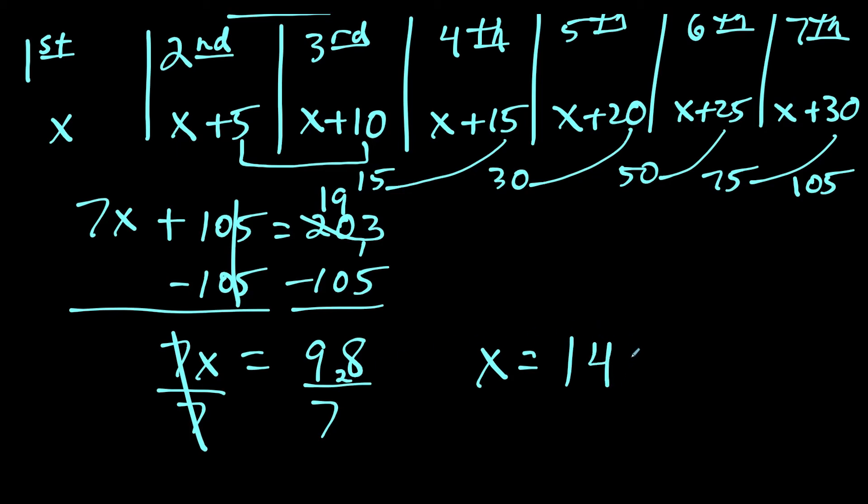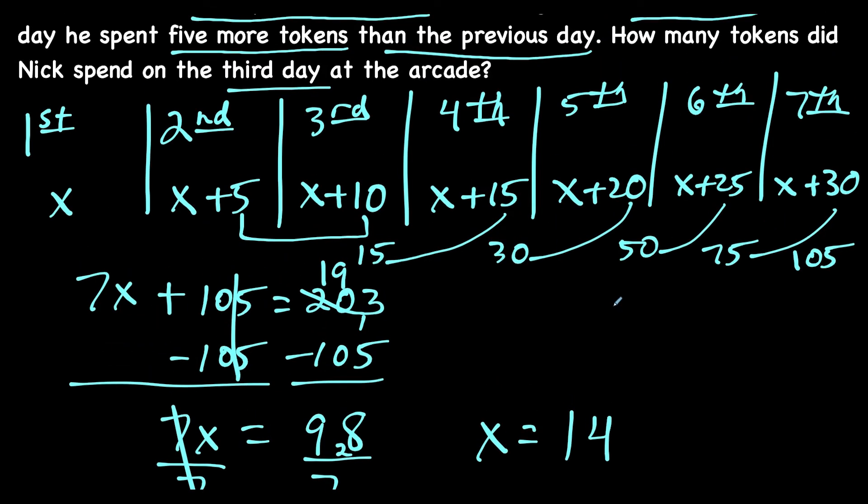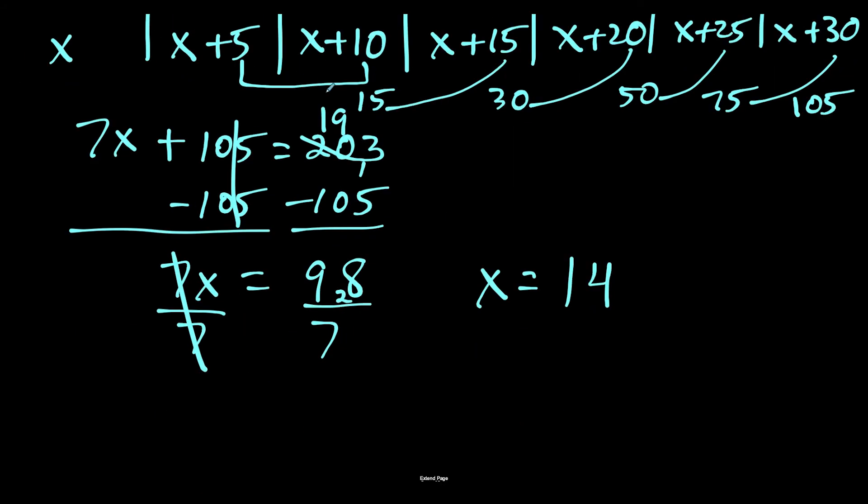But you have to be careful, this is not the answer. We are trying to find how many tokens Nick spent on the third day. Notice the third day was x plus 10, so we're trying to find the value of x plus 10. On the third day, Nick spent 14 plus 10, and this is tokens. Nick spent 24 tokens. This is our answer to this word problem.